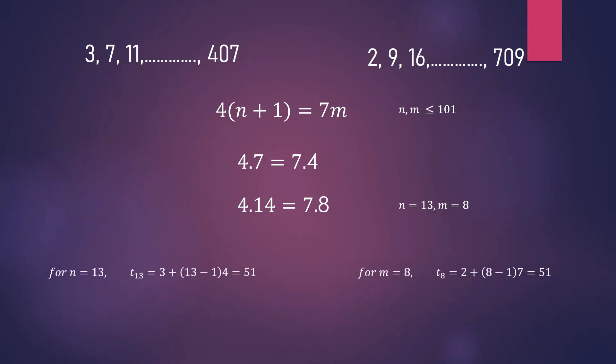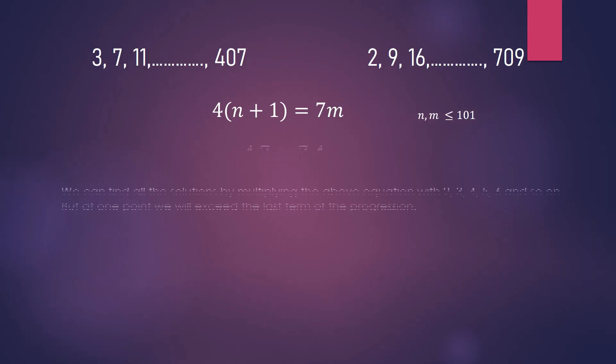By now, you must have got the idea as to find all the solutions of the equation. We can find all the solutions by multiplying the above equation with 2, 3, 4, 5, 6 and so on. But at one point we will exceed the last term of the progression.